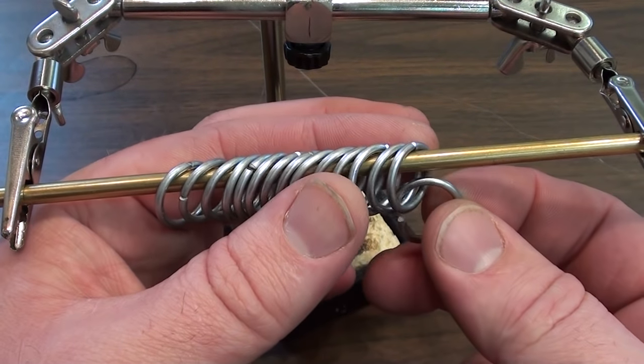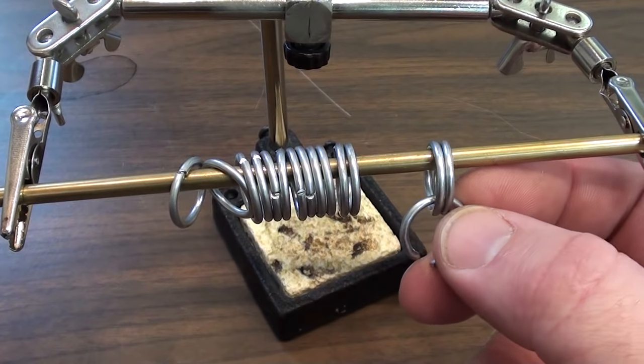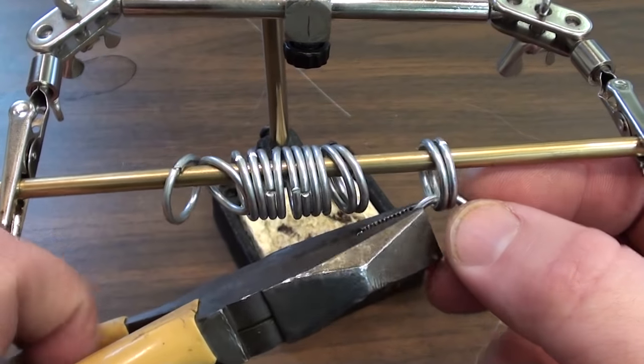You line them up at an angle and put one ring through the first two, and then bend it closed.